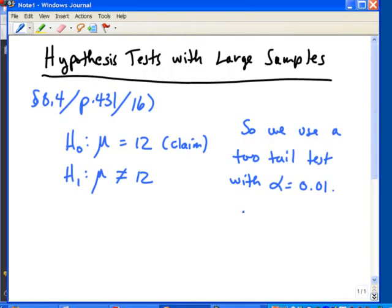So, let's go ahead and record that. So, the critical values are CV equals plus and minus 2.58.